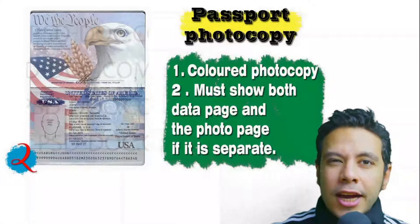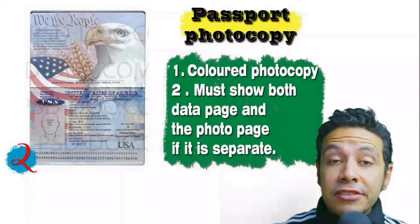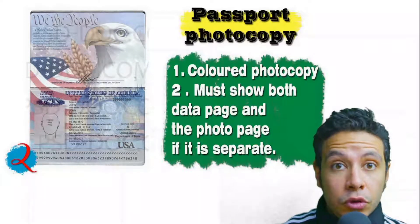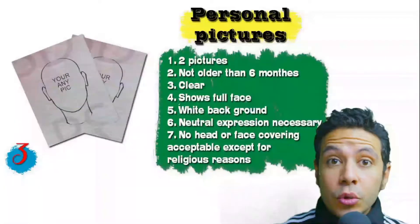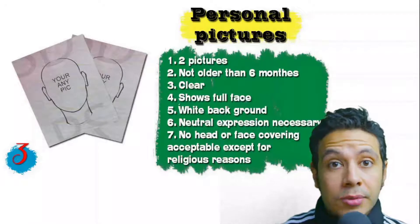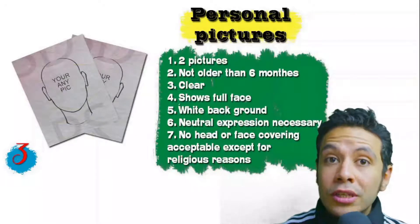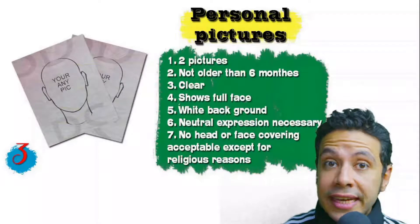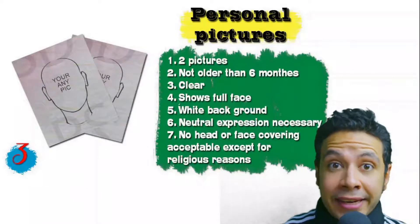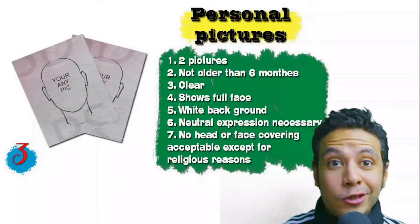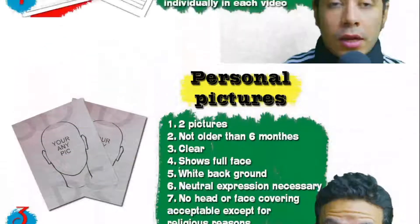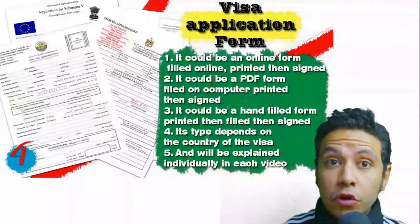In many cases you will also need a photocopy of your passport — it may be one copy or more, preferably colored, showing both the data page and the photo page. In some cases you might need to photocopy every page, but generally only the data and photo pages are needed. For personal pictures, you need at least two — sometimes one or three — but generally two. They must be new, not older than six months, clear, showing your full face, preferably with a white background and a neutral expression. No head or face covering is acceptable except for religious reasons.